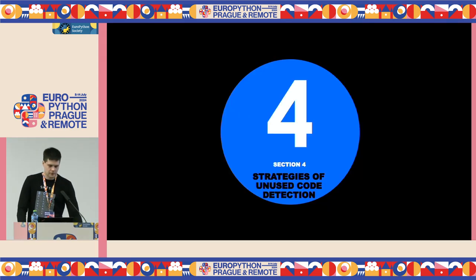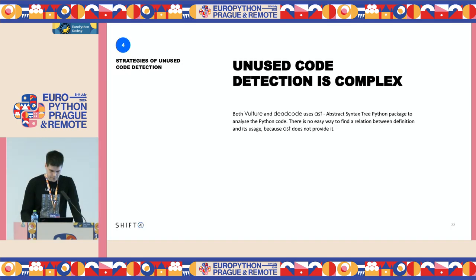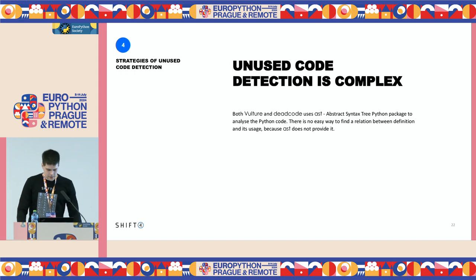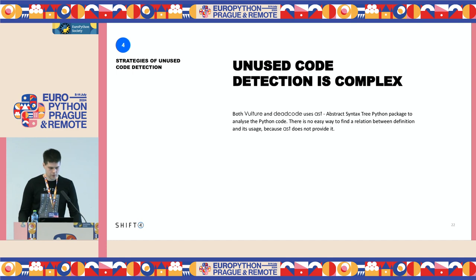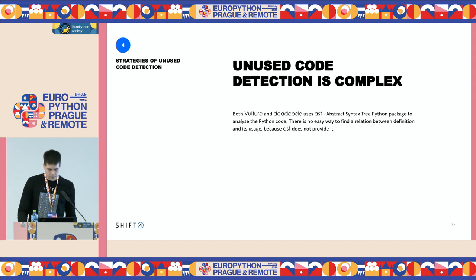Let's move to the last part of my presentation, which is about comparing two different strategies of detecting unused code. In general, detecting unused code is a complex task because the abstract syntax tree doesn't provide a relation between used code definitions and defined code. Both Vulture and .code use the abstract syntax tree, but these two packages have to create the association — the metadata between defined and used code — themselves.